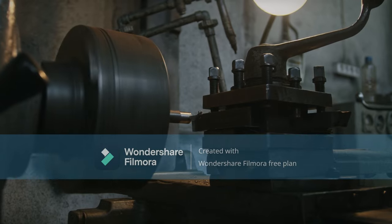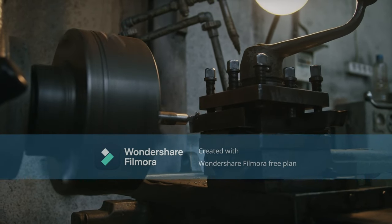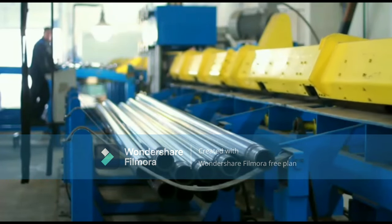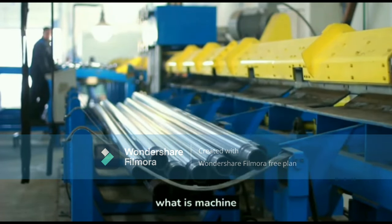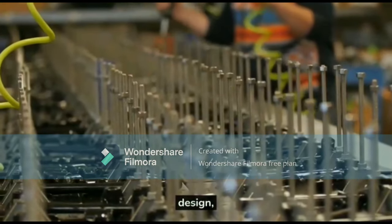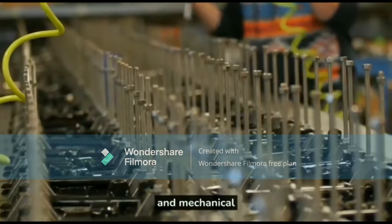Turret lathes are used for similar operations as engine lathes such as turning, facing, drilling, tapping, and knurling. However, due to their quick tool change capability, turret lathes are ideal for high-speed, high-volume production work where multiple operations need to be performed on a single workpiece quickly and accurately. They are also suitable for mass production or repetitive jobs that require multiple tool changes.